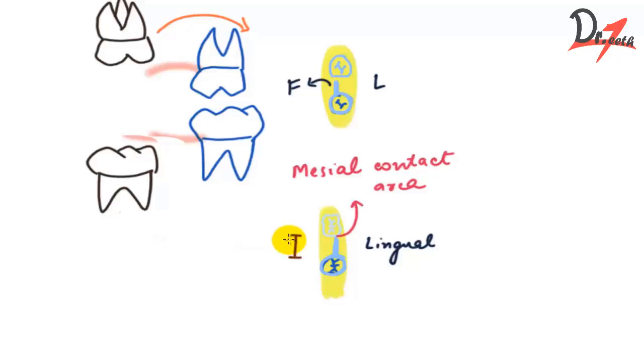It is recommended that the distal surface of the first primary molar and the mesial surface of the unerupted first permanent molar should be used. You can measure from the distal of the first primary molar and the mesial of the unerupted first permanent molar by radiograph.